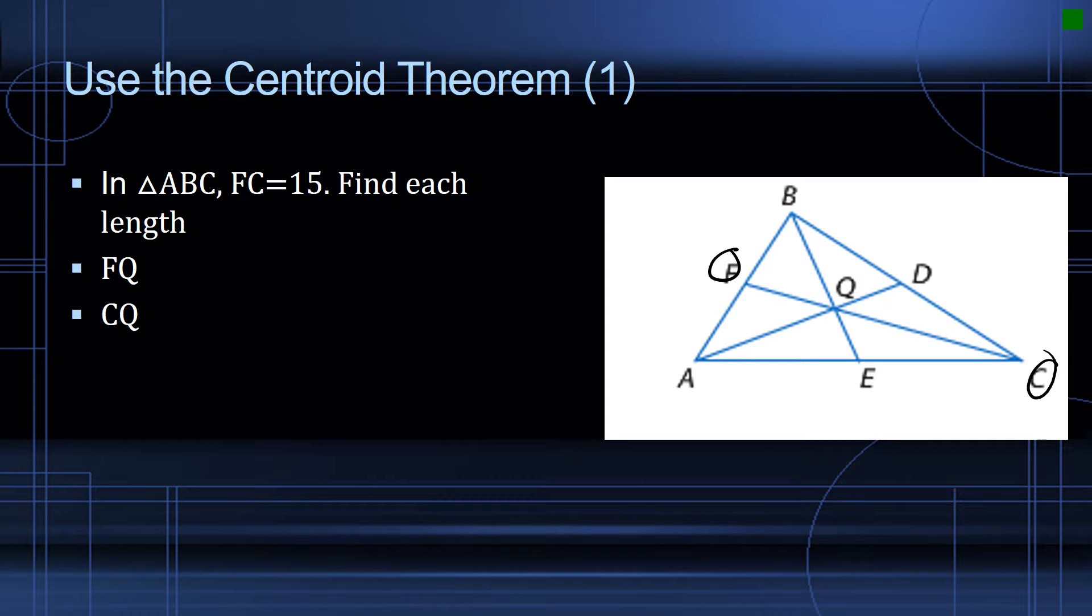FQ is from the midpoint of the side opposite the vertex C to the centroid here. Q is the centroid of these three medians.